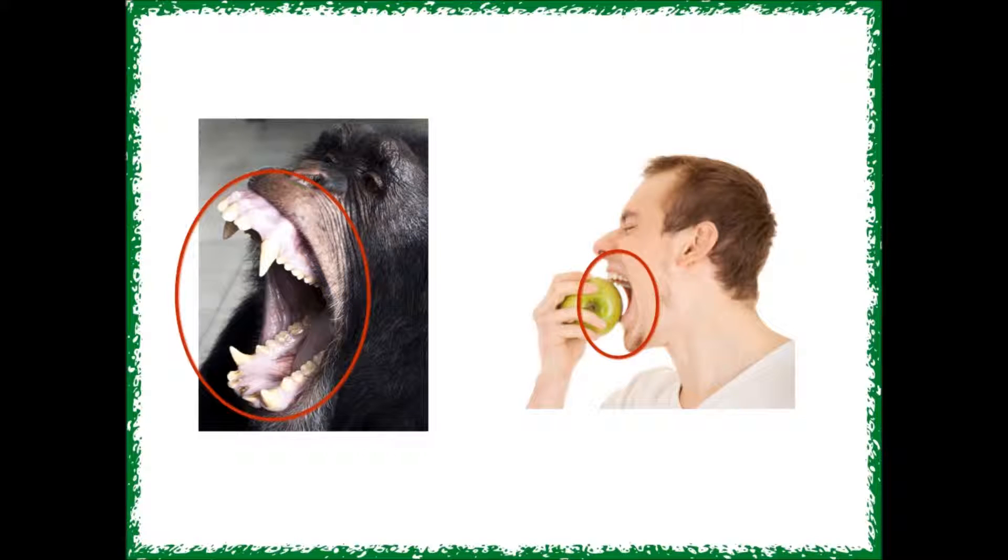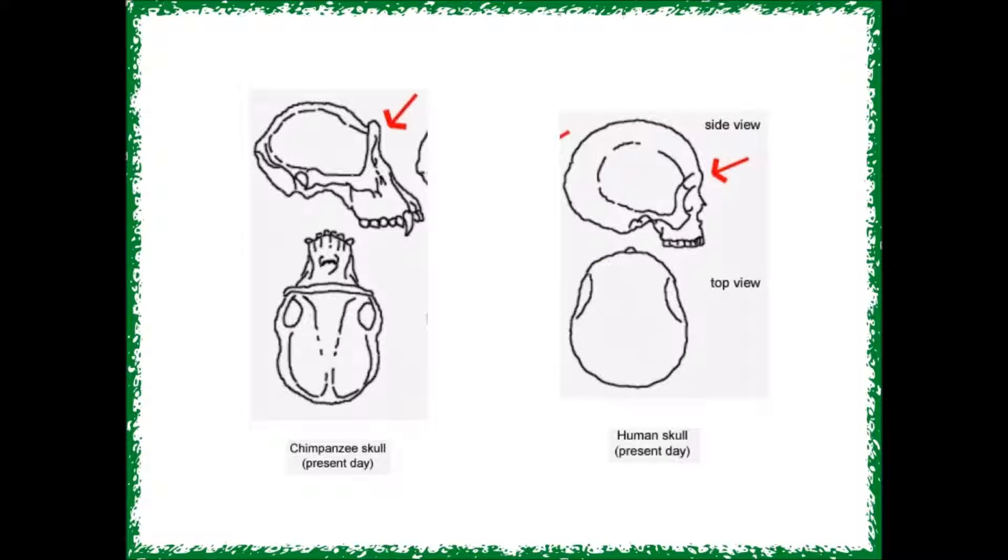This mutation can be seen in every single human on Earth, while the normal sequence of the gene is seen throughout all of our evolutionary cousins. The scientists that identified this mutation think that when the jaw muscles got weaker, it allowed the bones of our heads to grow bigger. This made for some extra room in our skulls for a bigger brain.